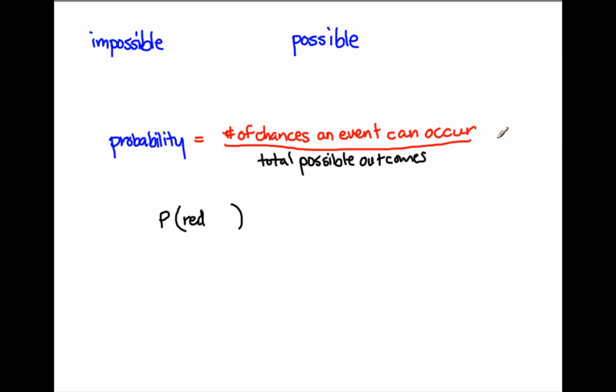I like thinking of probability as NOC over TPO. The number of chances an event can occur all over the total possible outcomes or the TPO. So NOC over TPO, NOC over TPO, NOC over TPO. So probability will be that.